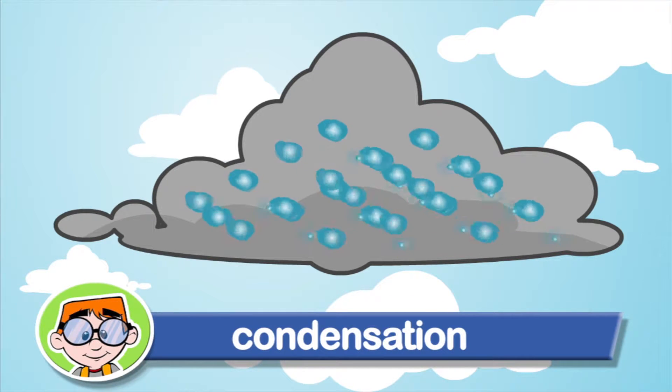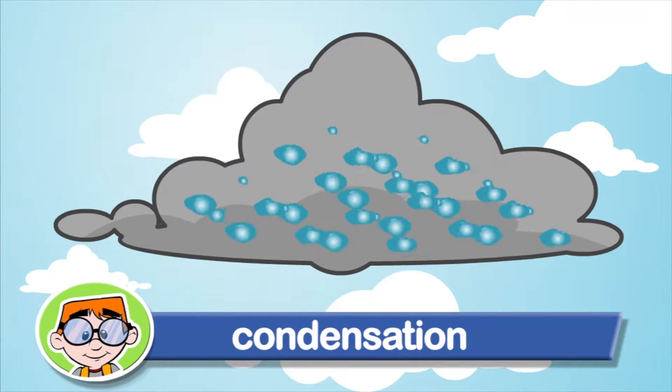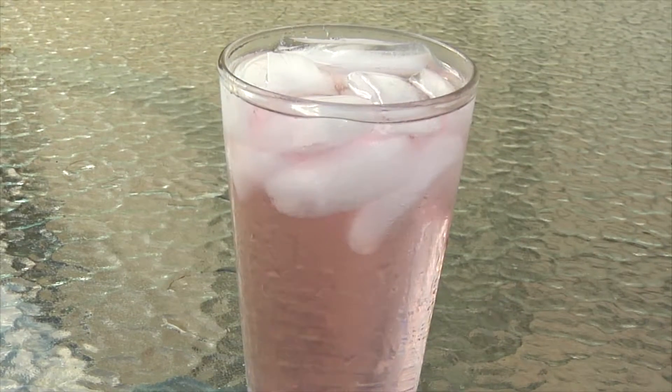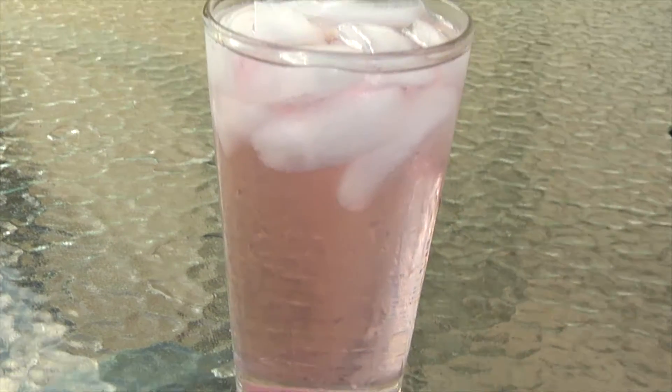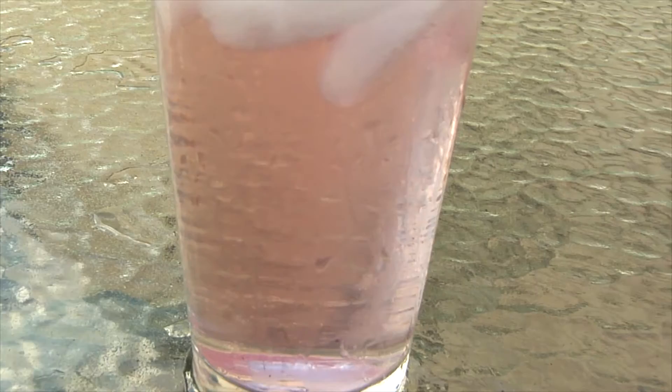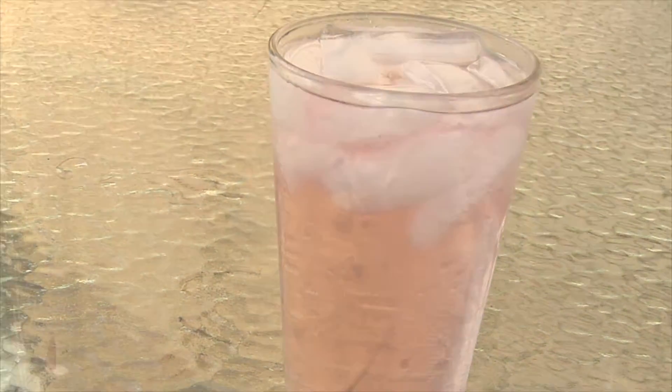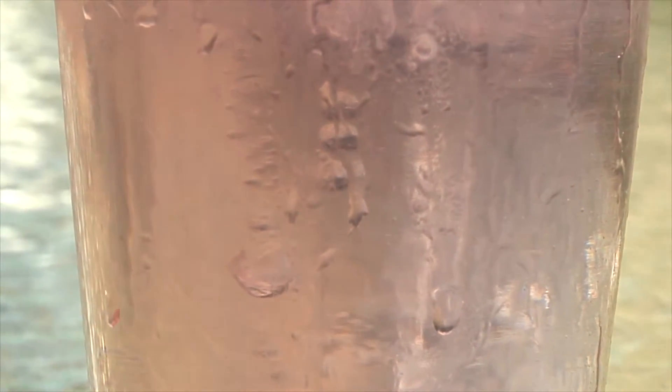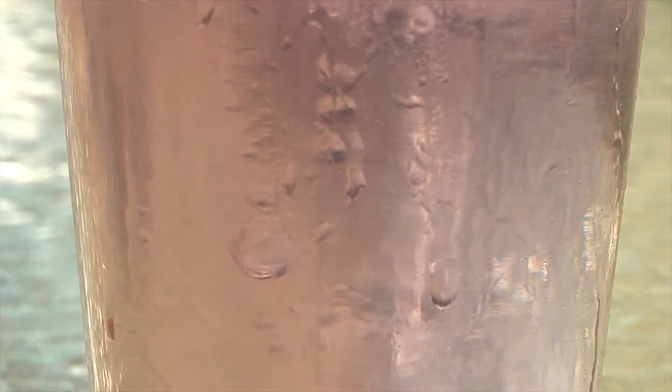It's called condensation. Here's an example of condensation. When you pour a glass of cold water on a hot day, you'll notice that water forms on the outside of the glass. The water on the outside came from the air — water vapor in the air turns back into a liquid when it touches the cold glass. That's condensation.